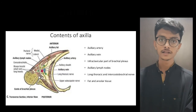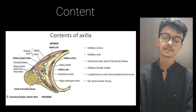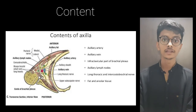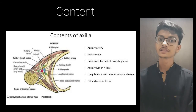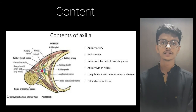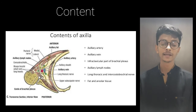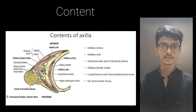The contents of the axilla include the axillary arteries and their branches, axillary veins and their tributaries, various lymph nodes, and branches of the brachial plexus, among other structures.